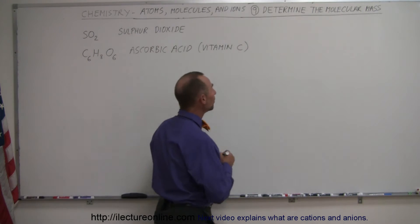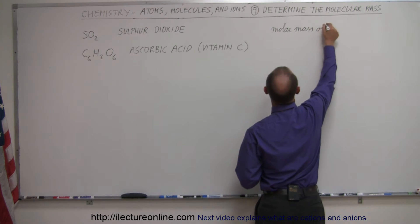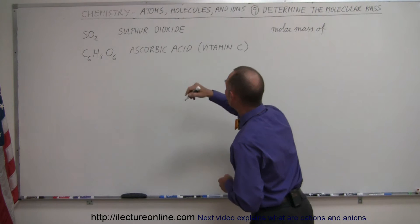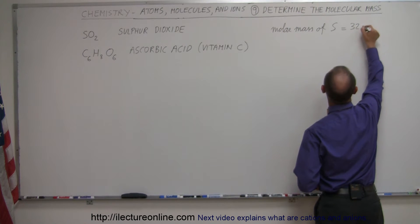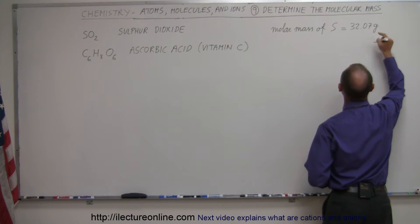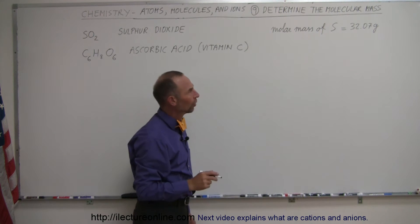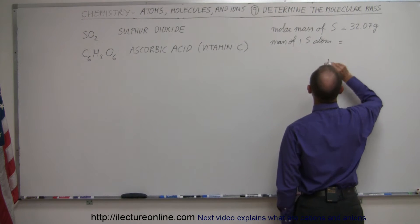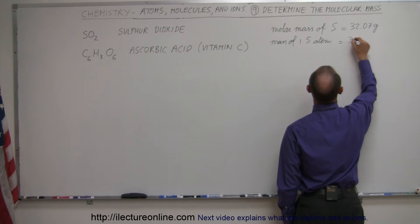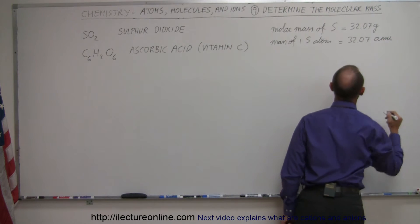So we know that the molar mass of one of these elements, let's start with sulfur. The molar mass of sulfur is equal to 32.07 grams. So that's the mass per mole of sulfur atoms. So the mass of a single sulfur atom is on average, that would be the average mass, of 32.07 AMUs, atomic mass units.